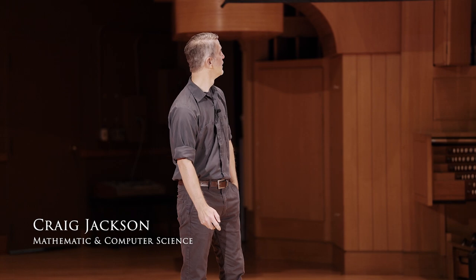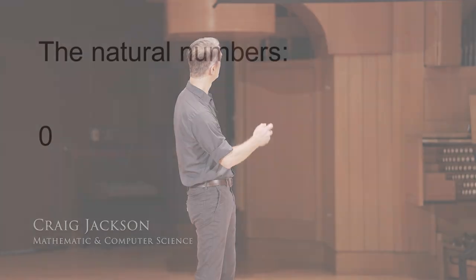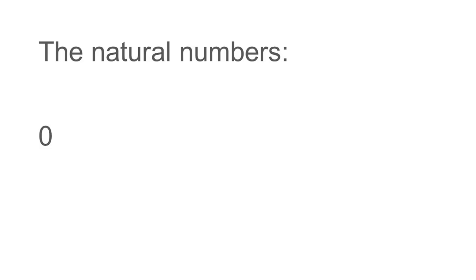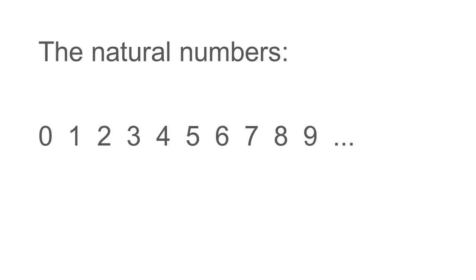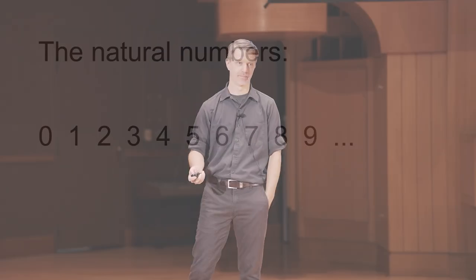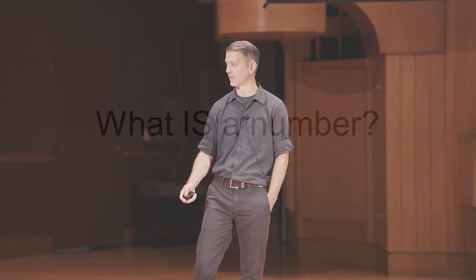The natural numbers are the numbers that you first learned about as a child: zero, one, two, and so on. The natural numbers are familiar to you — you use them all the time. And so because of that, you've probably never stopped to ask yourself the question: what is a number?